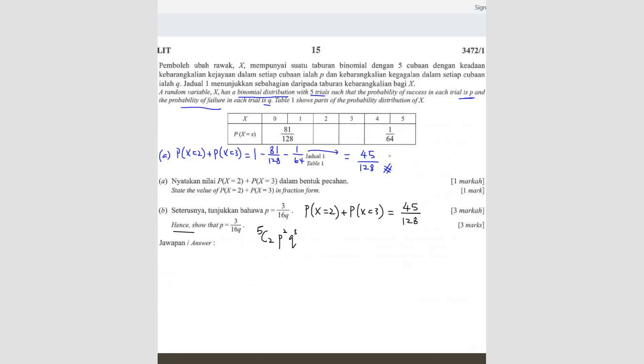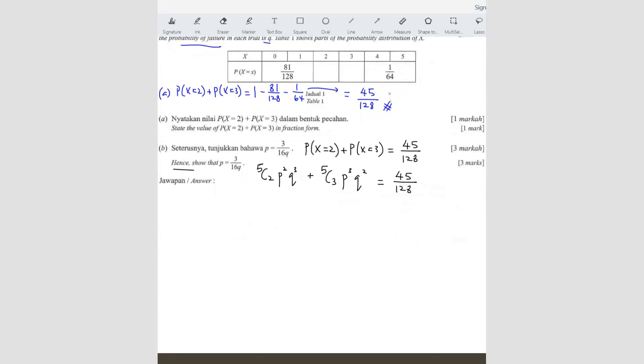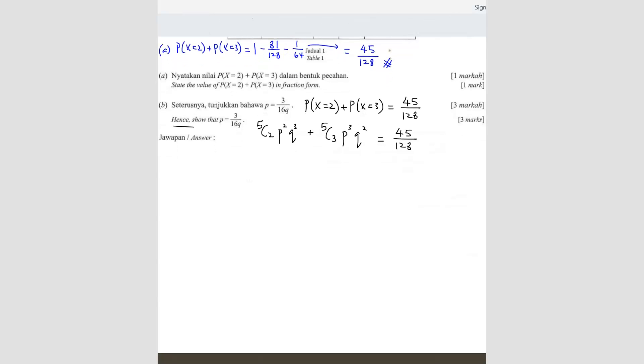So now we got this plus, so 5C3. We are doing the second part here. 5C3 times P power 3 times Q power 2 equals to 45 over 128. So what I'm going to do is I'm going to bring this over, so that I try to eliminate fraction as much as I can because I don't really like it to be there. So I'm going to bring 128 to the other side. So 5C2 is equals to 10. Let me check. 5C2, yes, equals to 10. Times 128, I will get 1280. So P square Q cube plus 5C3. 5C3 is also 10. So it's 10 times 128. So it's 1280 P cube and Q square equals to 45.